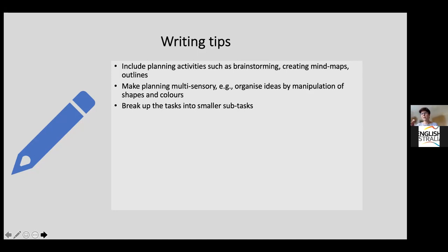Writing can be a daunting task for students with specific learning difficulties — it takes a lot of time and commitment. If you can cut it into smaller subtasks, asking students to produce just one body paragraph at a time, then the next, then the conclusion, and finally the introduction, it avoids one huge assignment all at once. Time is really important: students with specific learning difficulties probably need around 50% more time than the average student for writing, so giving them more time for assessment and planning assignments is critical.